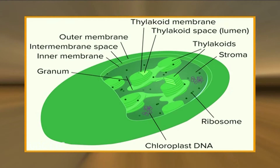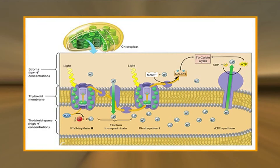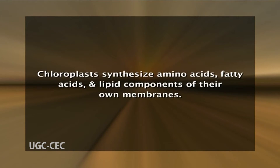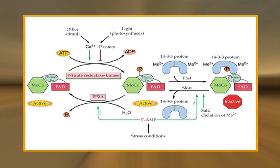However, chloroplasts are larger and more complex than mitochondria, and they perform several critical tasks in addition to the generation of ATP. Most importantly, chloroplasts are responsible for the photosynthetic conversion of carbon dioxide to carbohydrates. In addition, chloroplasts synthesize amino acids, fatty acids, and the lipid components of their own membranes. The reduction of nitrite to ammonia, an essential step in the incorporation of nitrogen into organic compounds, also occurs in chloroplasts. Moreover, chloroplasts are only one of several types of related organelles that play a variety of roles in plant cells.